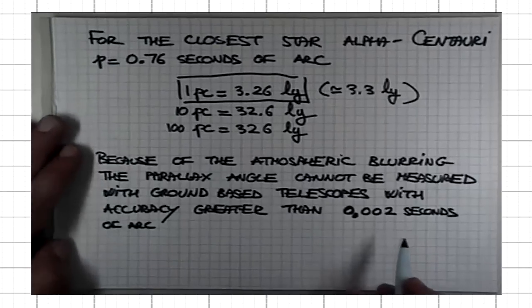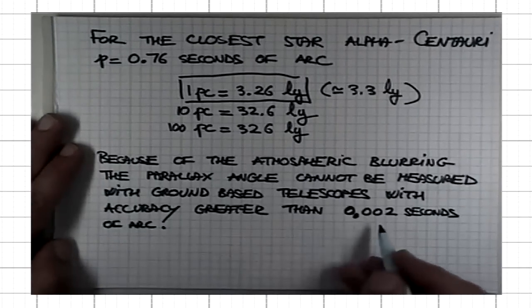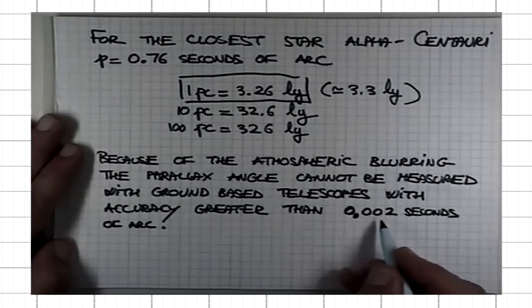What does this mean? That means that for a parallax angle of, say, 0.02, the error is 10%.